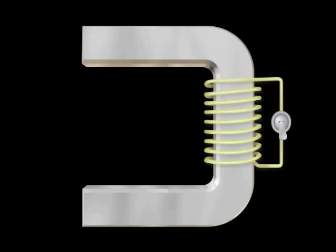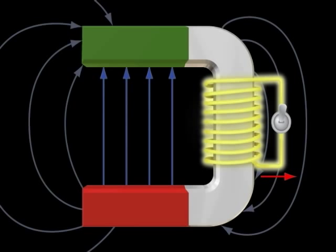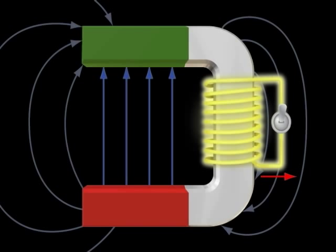With resistive magnets, the field is generated by a constant, external current supply. The current flows through wire coils and generates a large amount of heat in addition to the magnetic field. This heat is drawn off by a water cooling system. Resistive magnets only generate low field strengths, since they are limited by the ability of the cooling water to dissipate heat. In case of an emergency, a resistive magnet can be switched off at any time.